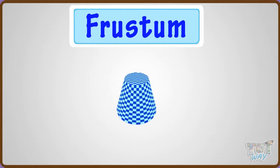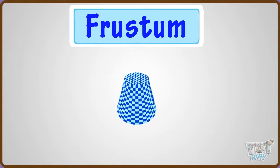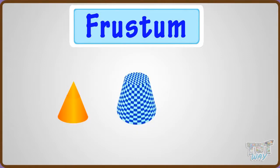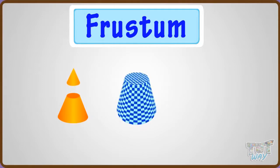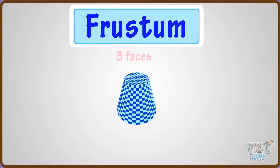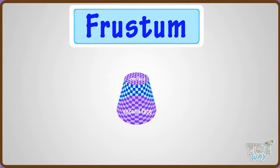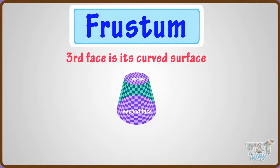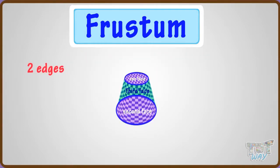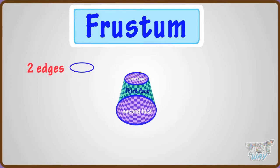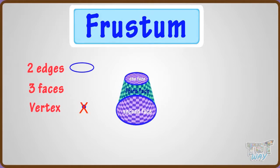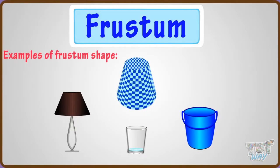Now, let's learn another shape — frustum. Frustum is a 3D shape which is a part of a conical solid, left after cutting off a top portion. It has three faces: two round-shaped faces, one at the top and one at the bottom, and the third face is its curved surface. It has two edges which are round in shape, three faces, and no vertex. These are a few objects that are frustum in shape.